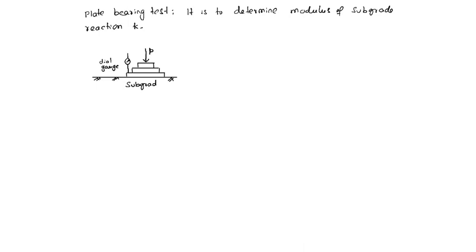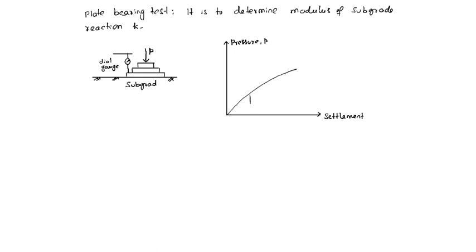Now plot a graph of pressure versus settlement — pressure P on one axis and settlement in centimeters on the other. The graph is plotted, and at 0.125 centimeter settlement, we read the corresponding pressure value.